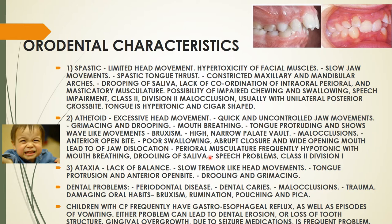In athetoid there can be speech problems and the malocclusion seen is Class 2 Division 1, whereas in spastic it was Class 2 Division 2. The next is ataxia — which presents with lack of balance, slow tremor-like head movements, tongue protrusion, anterior open bite, drooling, and grimacing.